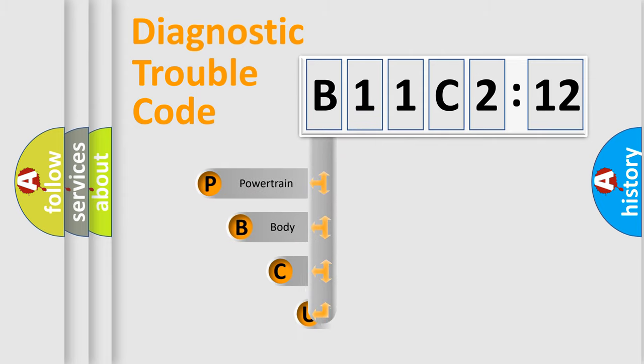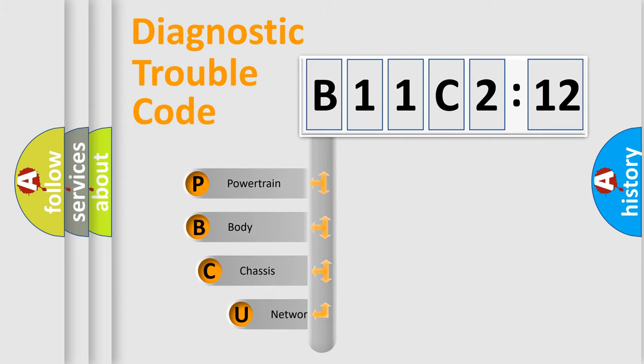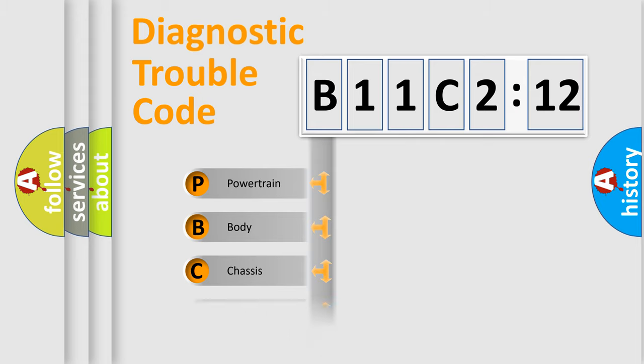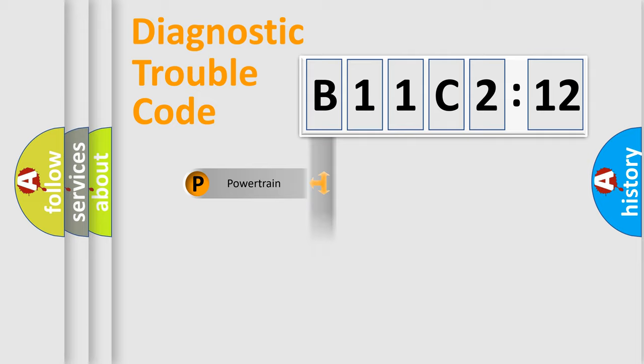This distribution is defined in the first character of the code. If the second character is expressed as zero, it is a standardized error. In the case of numbers 1, 2, or 3, it is a manufacturer-specific expression of a car-specific error.